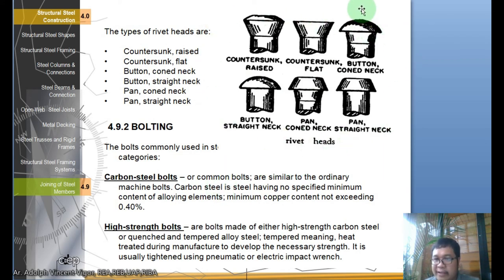In bolting, bolts are commonly used in these following categories. You have carbon steel bolts, or common bolts, which are similar to ordinary machine bolts. Carbon steel has no specified minimum content of alloying elements - the minimum copper content does not exceed 0.40 percent. Then you have high strength bolts, which are bolts made of either high strength carbon steel or quench and tempered alloy steel. Tempered meaning heat treated during manufacture to develop necessary strength. It is usually tightened using pneumatic or electric impact wrench.